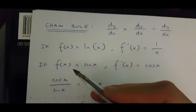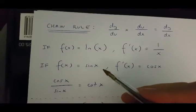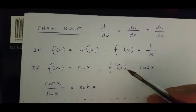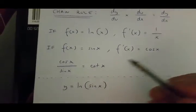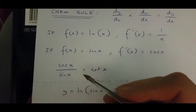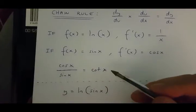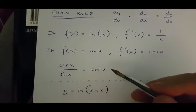If function of x equals sin x, then its derivative is equal to cos x. And finally, cos x over sin x is equal to cot x.